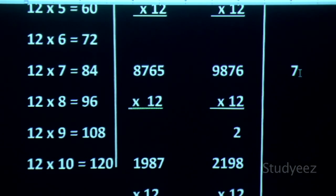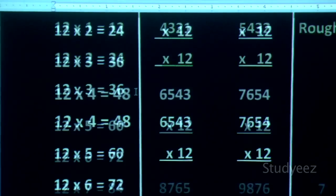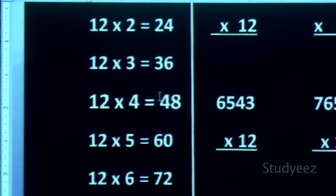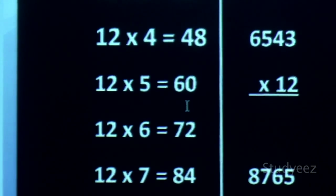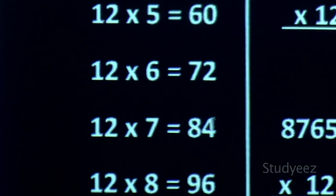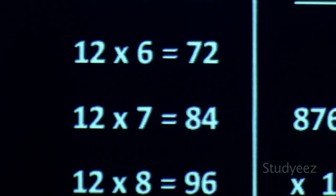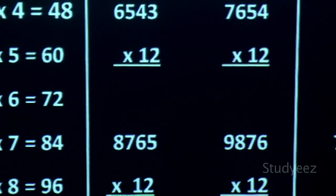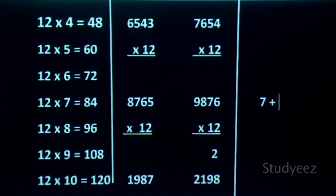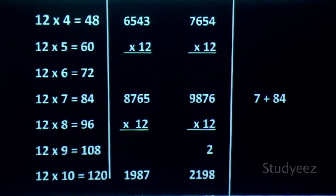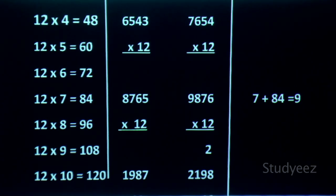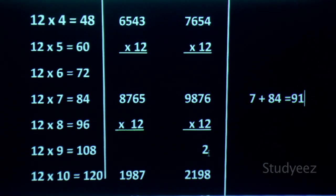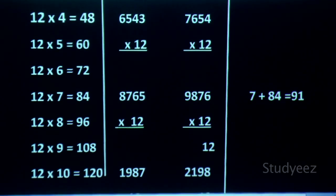For 12×7, you go from the beginning: 12×1=12, 12×2=24, 12×3=36, 12×4=48, 12×5=60, 12×6=72, 12×7=84. You add 84 plus 7 (the carry), which gives you 91. You take 1 down as the answer digit and 9 as carry in the rough column.